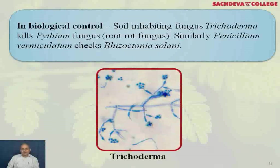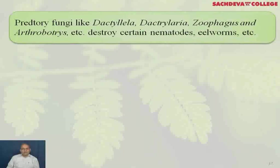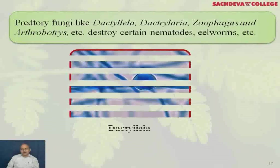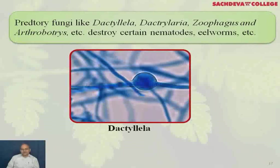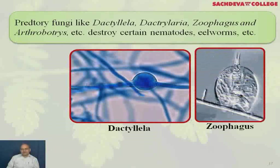In biological control, the soil-inhabiting fungus Trichoderma kills Pythium fungus, which causes root rot. Penicillium vermiculatum checks Rhizoctonia solani. Predatory fungi like Dactylella, Dactylaria, Arthrobotrys, etc., destroy certain nematodes and eelworms. This is Dactylella and this is Arthrobotrys — these are predatory fungi.